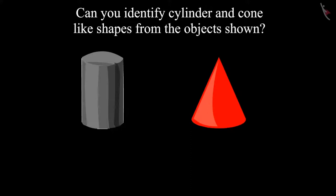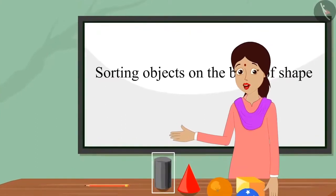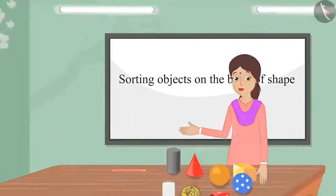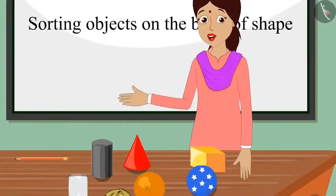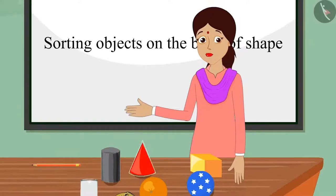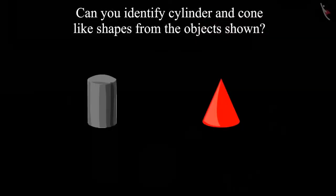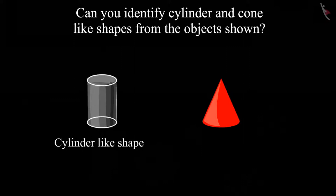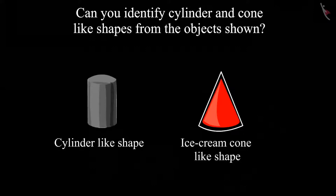Oh, is it so? Come on, let us identify the cylinder-like shape and the cone-like shape out of these two objects. Children, can you identify the shape of these objects? Teacher, its shape is like that of a cylinder. Well done Pinky — it is like a cylinder. Teacher, its shape is like a cone. Well done Chotu — it has a cone-like shape. So as you have seen, the cylinder-like shape is round on both sides, but the cone-like shape is round on one side and pointed on the other side.